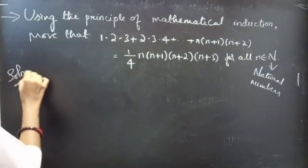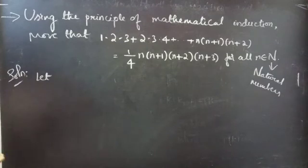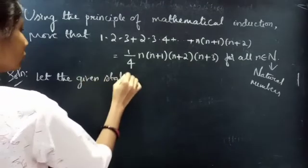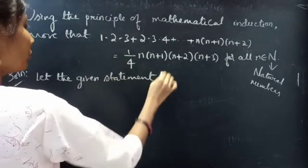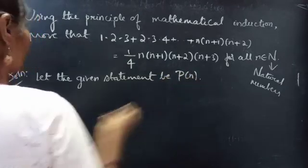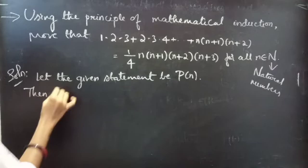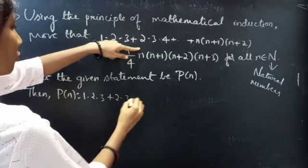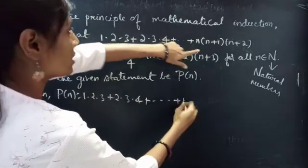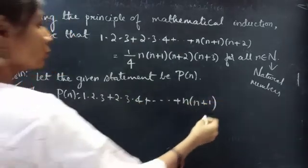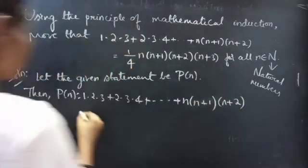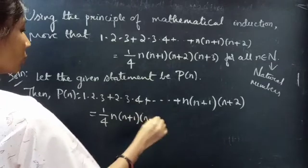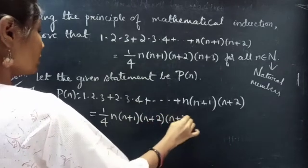So, let the given statement be P(n). Then, P(n) states that 1·2·3 + 2·3·4 + ... + n(n+1)(n+2) equals (1/4)·n(n+1)(n+2)(n+3).